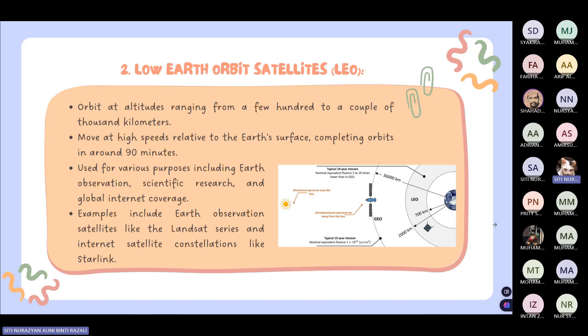Next we have low Earth orbit satellites. LEO orbits at altitudes ranging from a few hundred to a couple of thousand kilometers. It moves at high speeds relative to the Earth's surface, completing orbits in around 90 minutes. It is used for various purposes including Earth observation, scientific research, and global internet coverage. Examples include Earth observation satellites like the Landsat series and internet satellite constellations like Starlink.